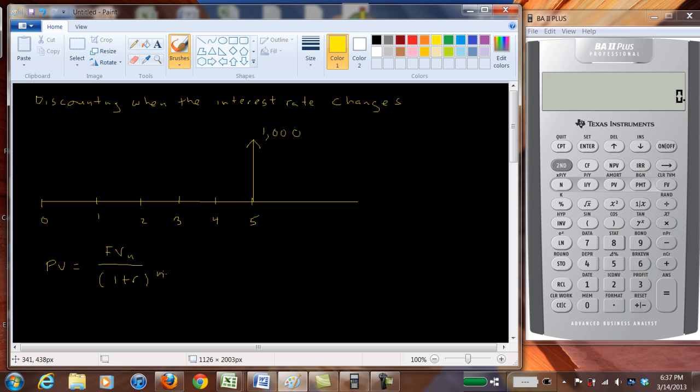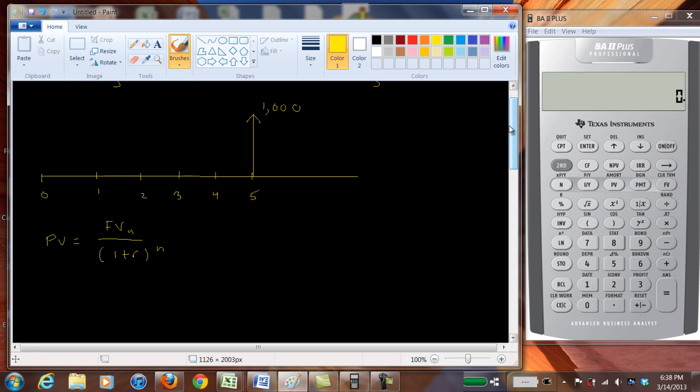Now suppose for example, I've got a little cash flow diagram here, we're receiving a thousand dollars five years from now and we want to find the present value today. But let's say that the interest rate is eight percent in years one to three.